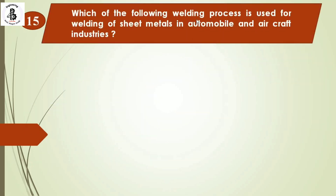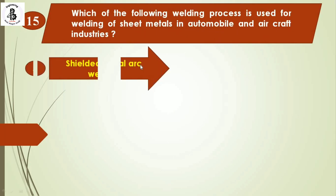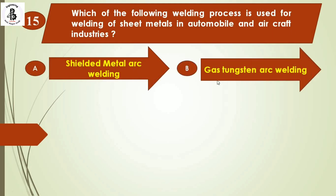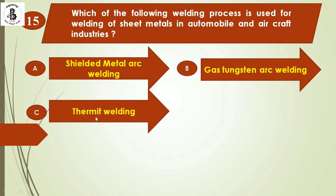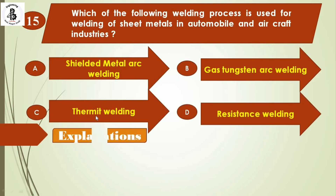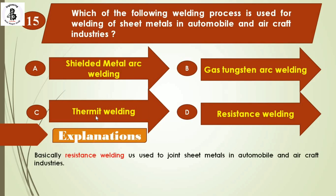The next question: which welding process is used for welding sheet metals in automobile and aircraft industries? Option A: shielded metal arc welding, Option B: gas tungsten arc welding, Option C: thermite welding, Option D: resistance welding. In automobile and aircraft industries, the bodies of cars and aircraft are joined using resistance welding. The right answer is Option D.